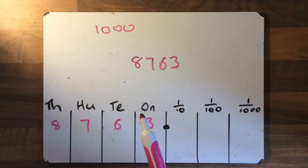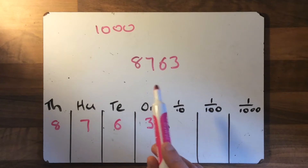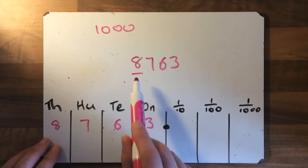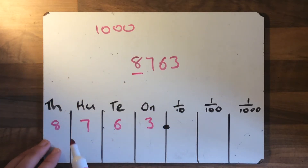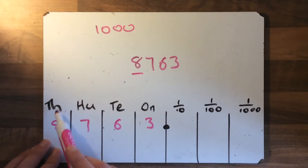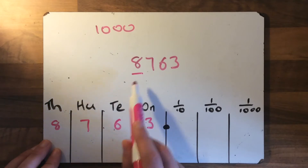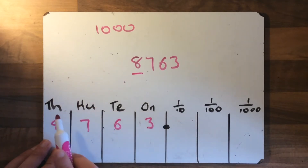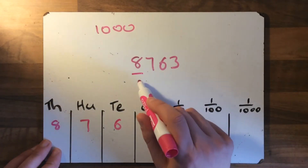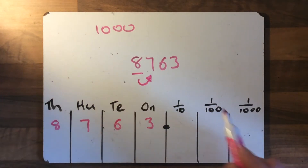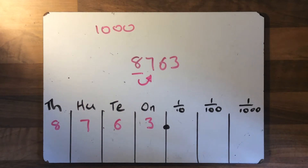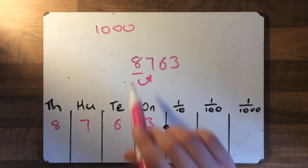So if we're rounding to the nearest thousand, the procedure that we need to follow: we need to underline the number that we're rounding to. So we're rounding to the nearest thousand, so we underline the number that is in the thousands column — you can see it's the eight. And then we look one next door to the right. That number to the right of the number that we are rounding is the one we focus on.